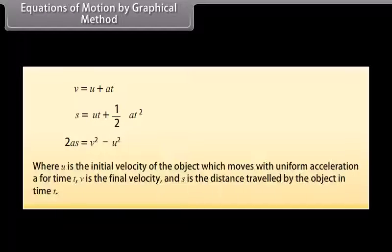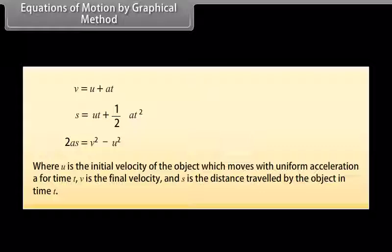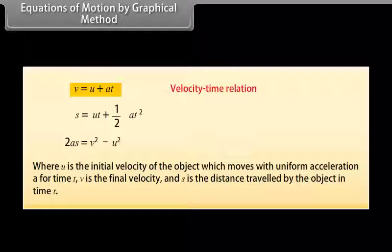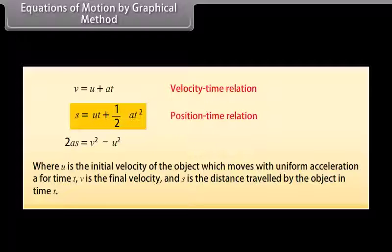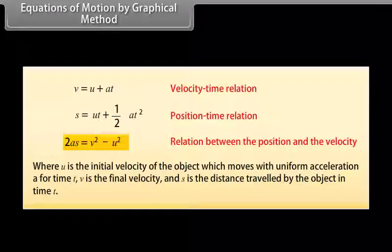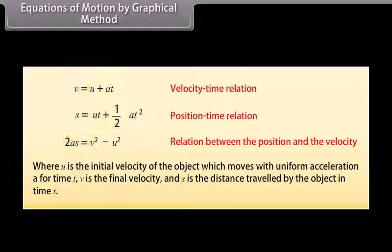The three equations of motion are: V = U + AT; S = UT + ½AT²; and 2AS = V² − U². We use the initial velocity U of the object moving with uniform acceleration A for time T. V is the final velocity and S is the distance travelled in time T. The first equation describes the velocity-time relation, the second represents the position-time relation, and the third represents the relation between position and velocity.